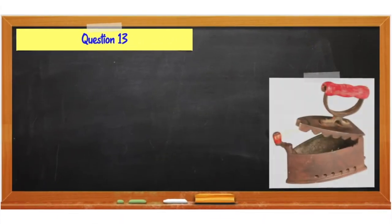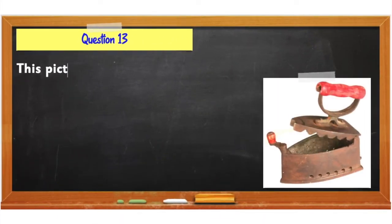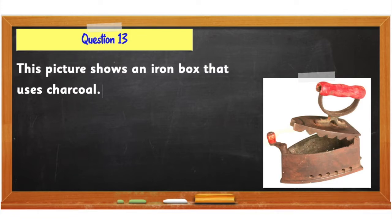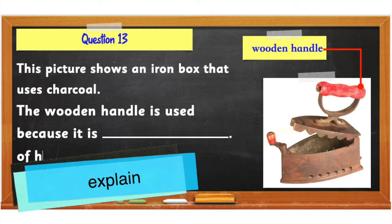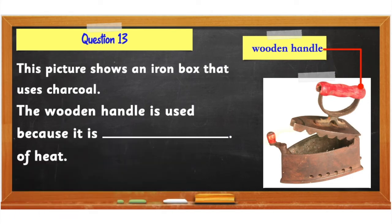Question number 13: This picture shows an iron box that uses charcoal. It has a wooden handle. Explain. The wooden handle is used because it is a bad or poor conductor of heat.